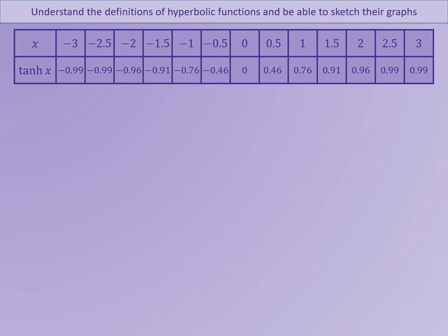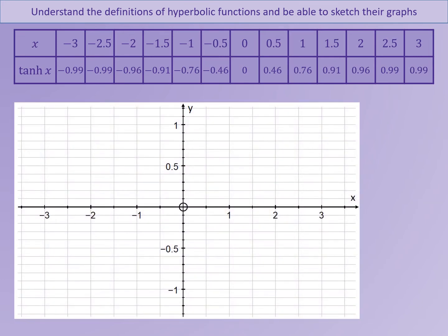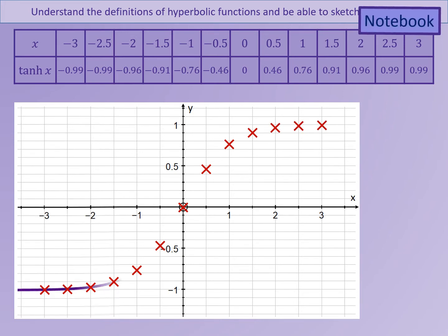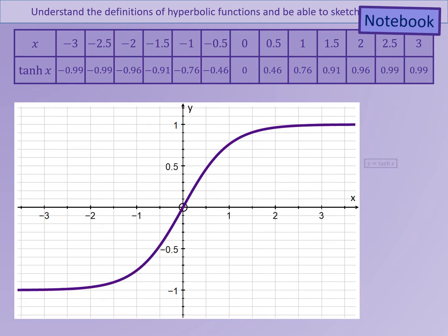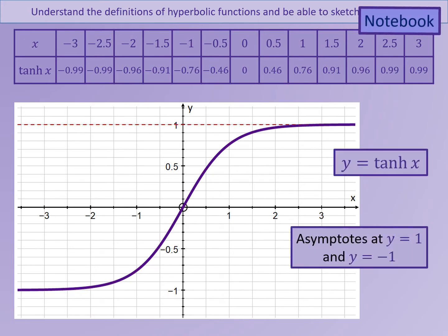Finally, we're going to do the same for y equals tanh x. As x becomes very large or very small, y tends towards 1 or minus 1.